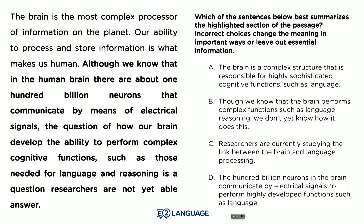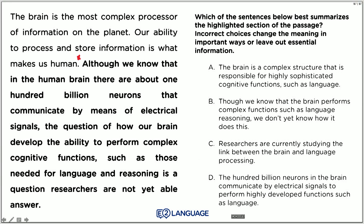How did you go? Did you find the answer? I hope you did it because you do need to practice this stuff — it's not theory, you have to actually build those neurons in your brain. In fact, this passage is about neurons in the brain. Let's read this sentence: 'Although we know that in the human brain there are about 100 billion neurons that communicate by means of electrical signals, the question of how our brain develops the ability to perform complex cognitive functions such as those needed for language and reasoning is a question researchers are not yet able to answer.'